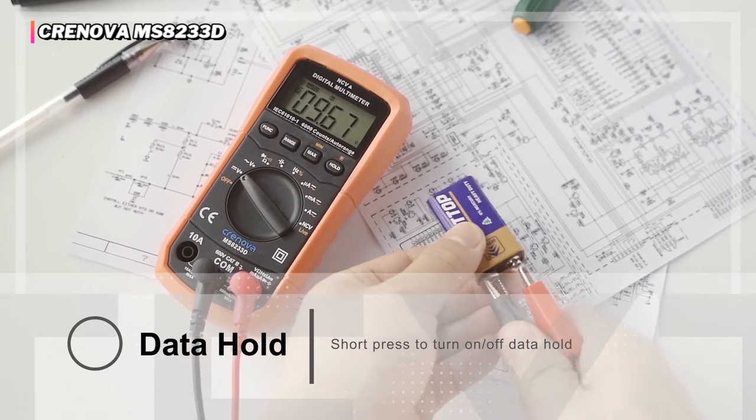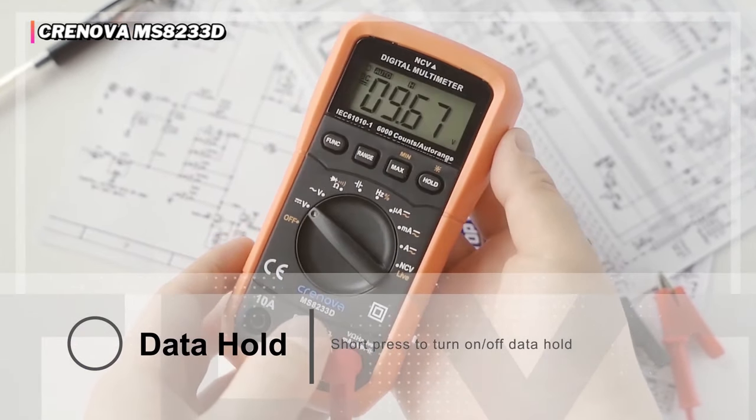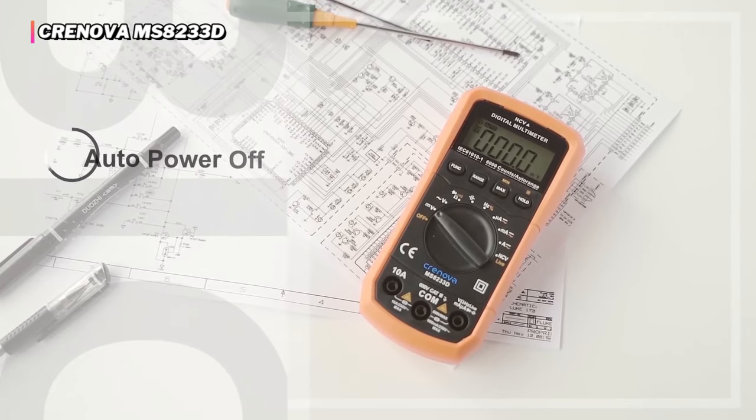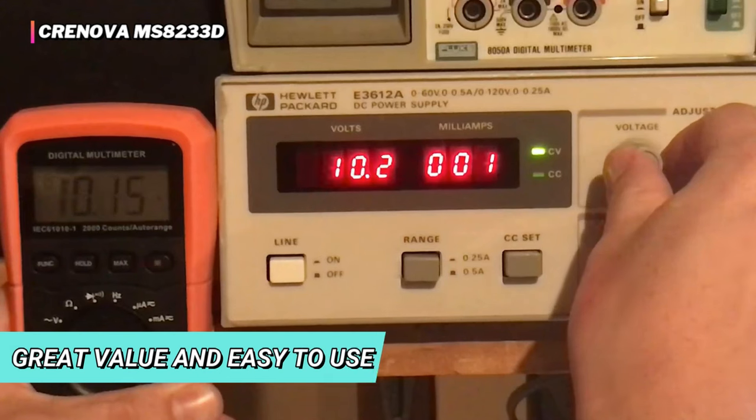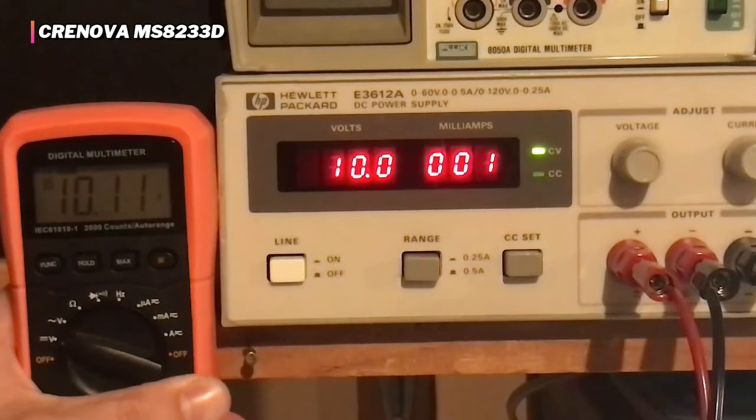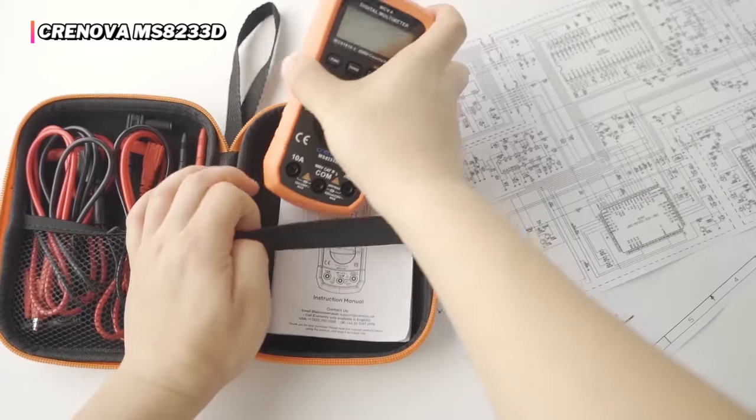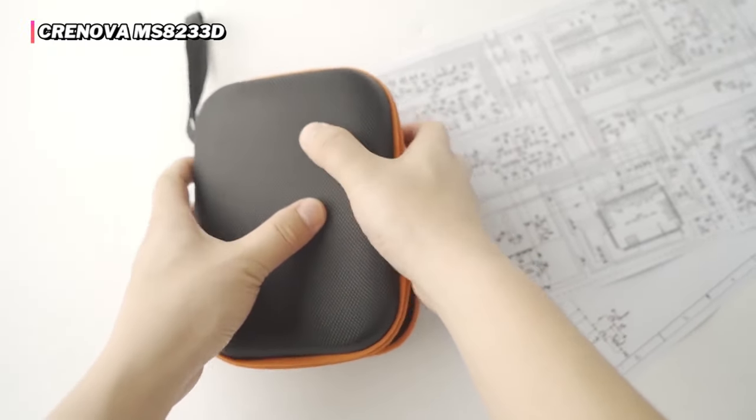This meter lacks some of the more advanced features, like a temperature probe or a dedicated transistor test. It only has a maximum function, no minimum function. Still, it's a great value and easy to use. So we think the Cronova MS8233D more than compensates for its flaws, making it our top recommendation to beginners or those looking for basic functionality at a bargain.